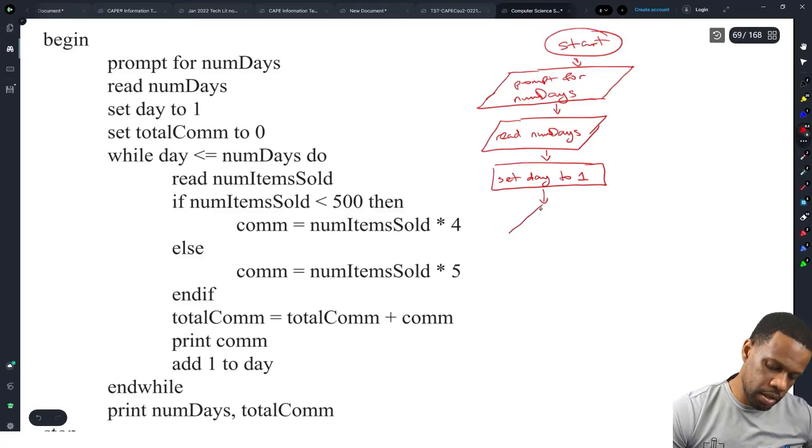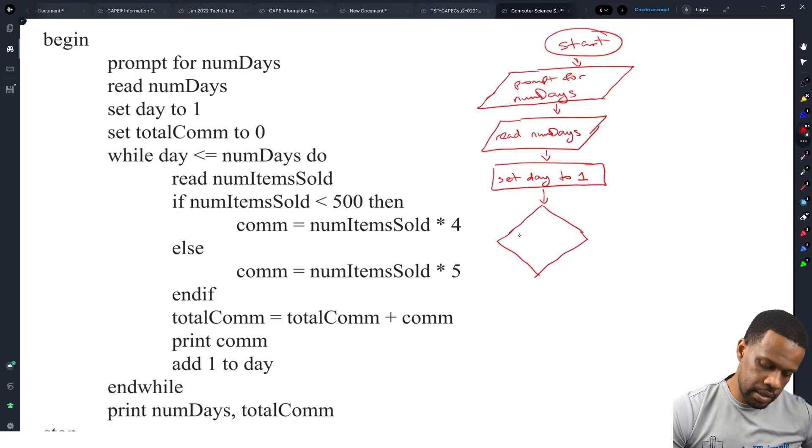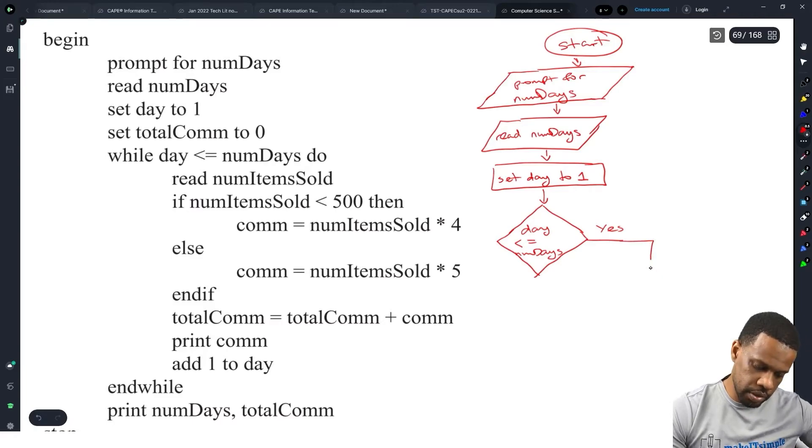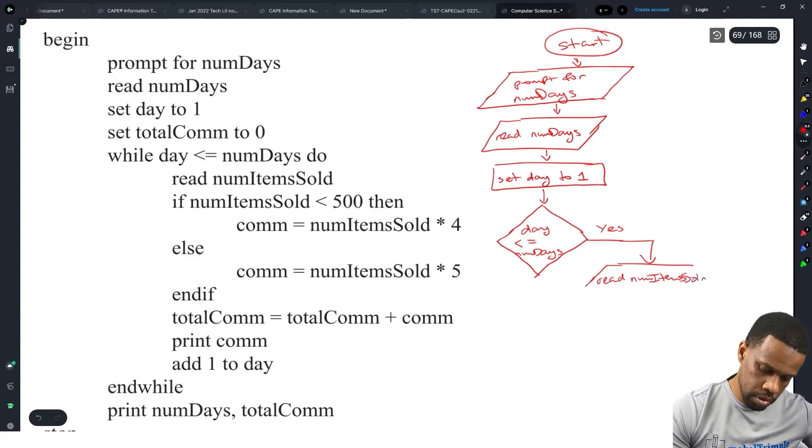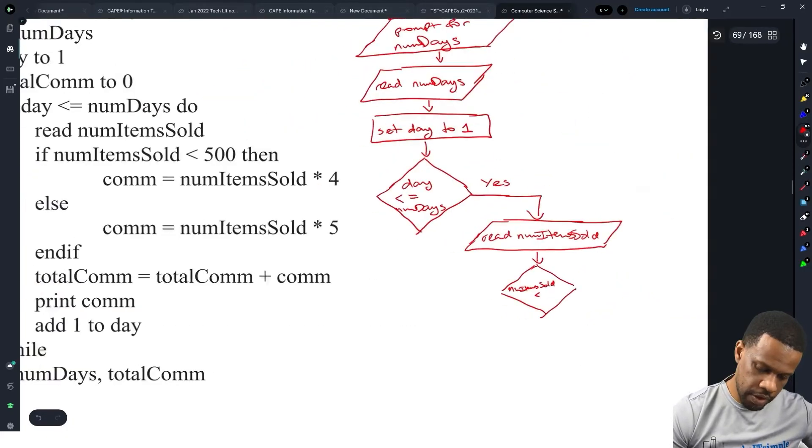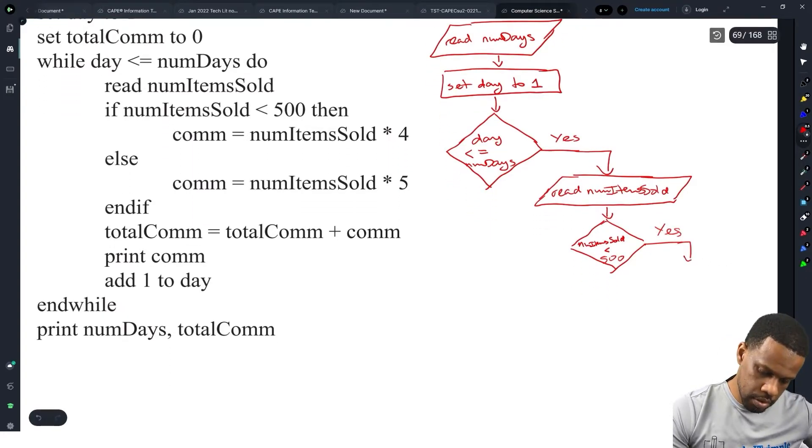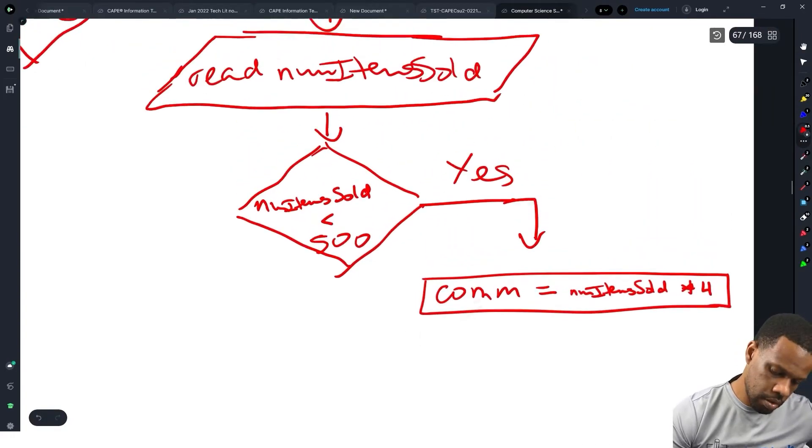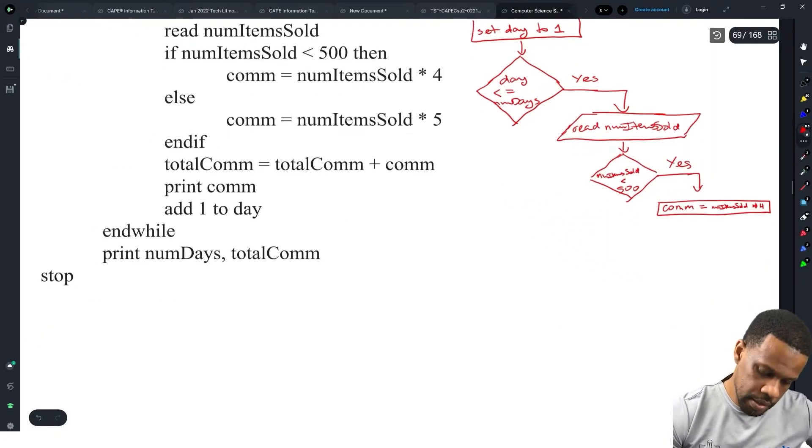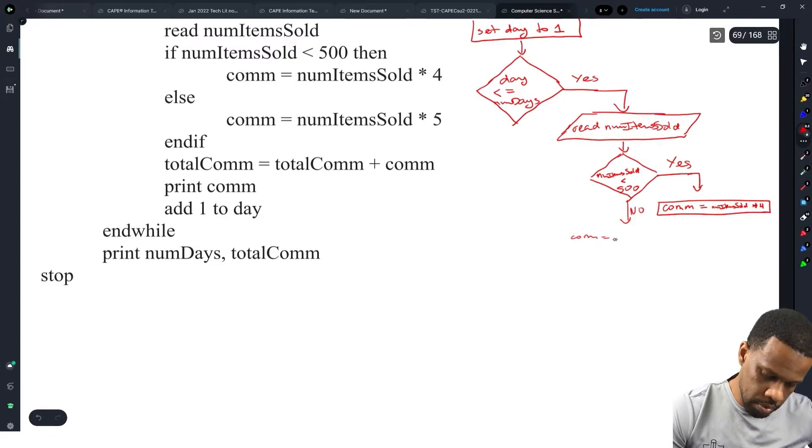Set day to one. That will be a rectangle. And now we have a while loop. So the while is going to be a diamond. Immediately we have a diamond. While day is less than or equal to num days. So we have a yes. Our job is to read number of items sold. If num items sold is less than 500, we have a yes.